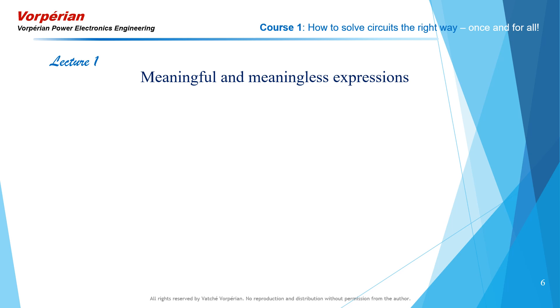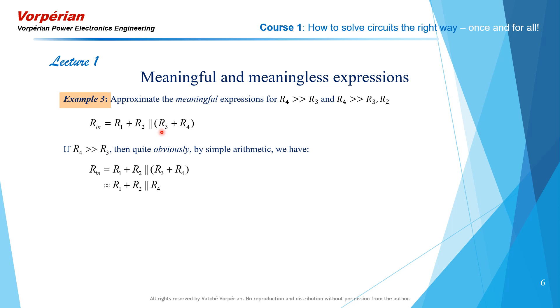We are now going to compare the process of approximation in each of these meaningful and meaningless expressions. We start with the meaningful expression and approximate it for R4 much larger than R3 and R4 much larger than R3 and R2. If R4 is much larger than R3, then quite obviously we have the following approximation. You simply throw R3 with respect to R4 and you get your first approximation: Rn is approximately equal to R1 plus R2 parallel R4. Now if we want to approximate this further for R4 much larger than R2, then we recognize that in a parallel combination, the smaller of two resistors dominates. Therefore, continuing from this approximation with R2 much less than R4, we have Rn reduces to R1 plus R2. And we're done.